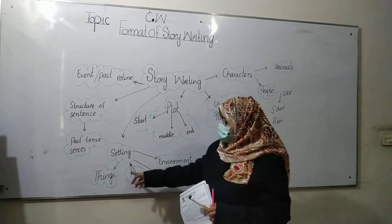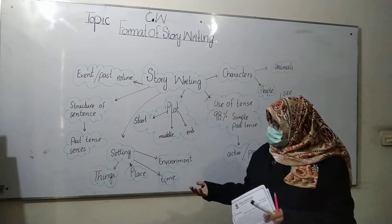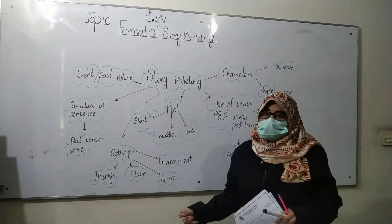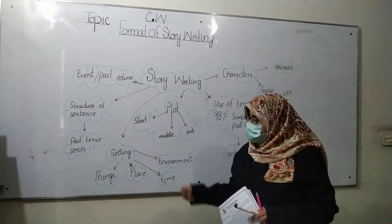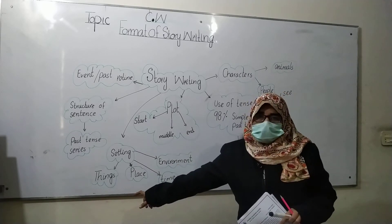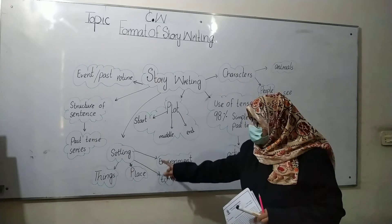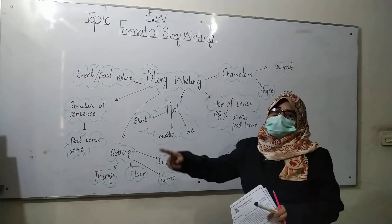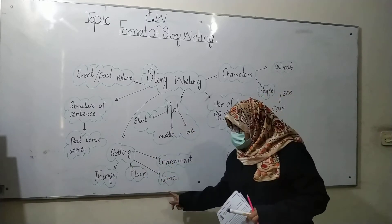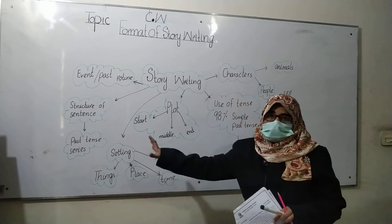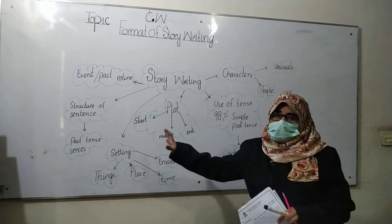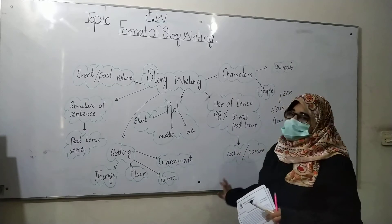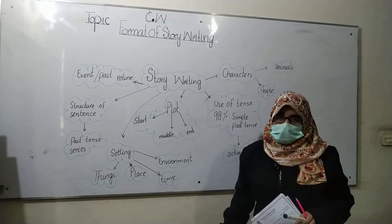Next is the setting. What will be the setting of the story? In the setting, you can define or describe things: you can define the place, you can define the environment, you can define the time. This is the setting of the story writing, and all these things together are called the format of story writing.